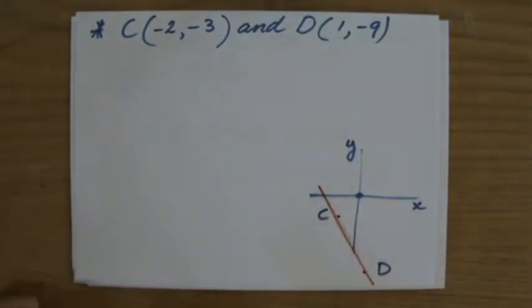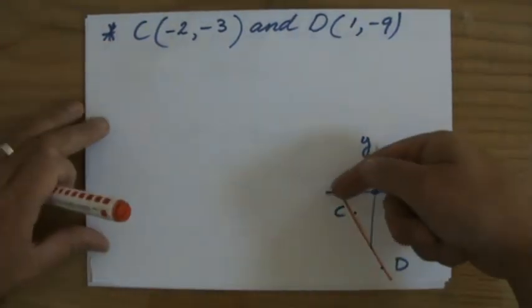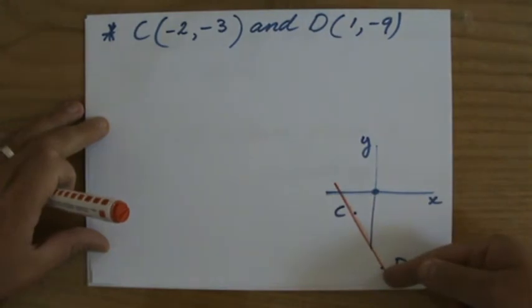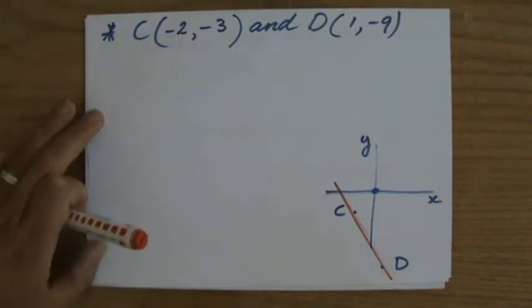And why do I sketch it? Because it shows me already that the gradient is negative. The line is going down, so the gradient is negative.